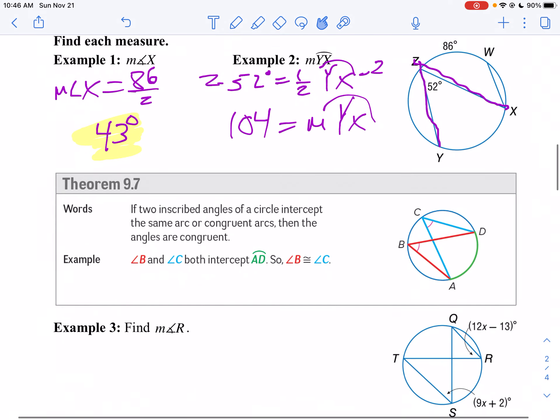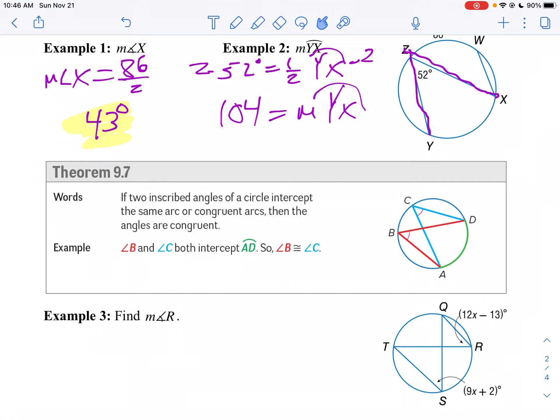Now a corollary, I guess your textbook calls this a separate theorem, but it says this. If you have two inscribed angles and they go through the same arc, they have to be congruent. That should make sense because angle b is going to be half of arc AD. Angle c is going to be half of arc AD. Therefore, by the transitive property, angle c is congruent to angle b.